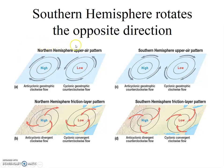Thus far we have focused on the northern hemisphere, and we will continue to do so, but the southern hemisphere flow patterns simply change the rotation direction. The upper atmosphere winds are still geostrophic, and the lower atmosphere winds are still divergent or convergent, depending on which type of pressure cell exists. Only the direction — clockwise or counterclockwise — changes.